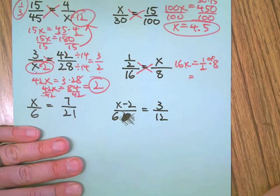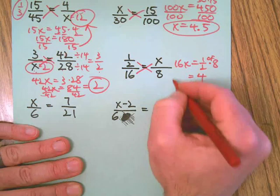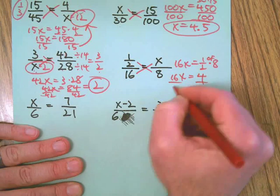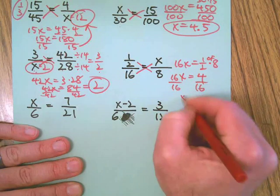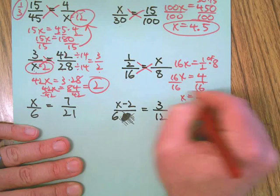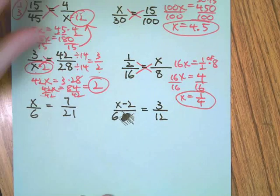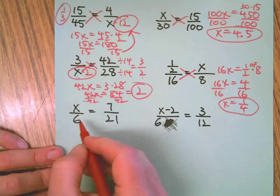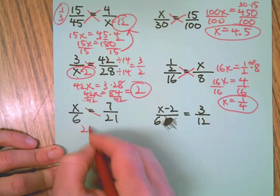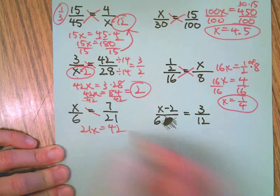16 times X on one side, one half times eight on the other side. Remember, one half times eight is like saying one half of eight, which is four. 16X equals 4.